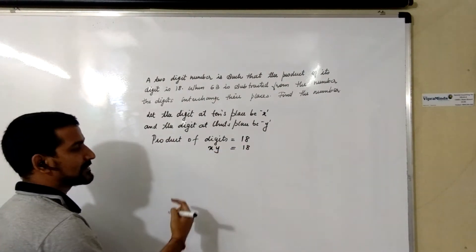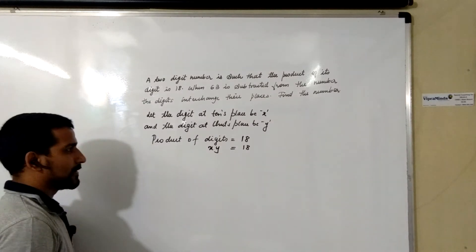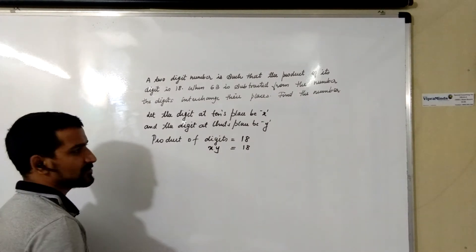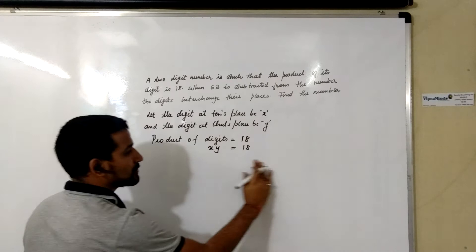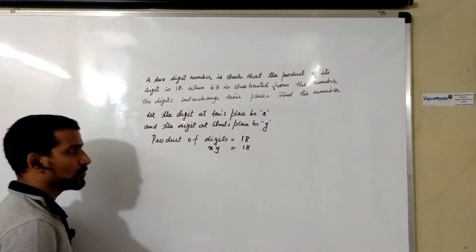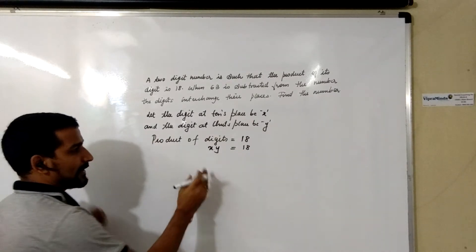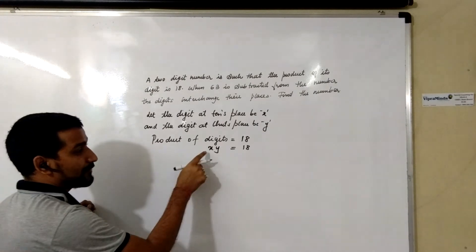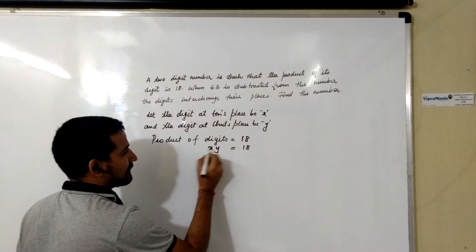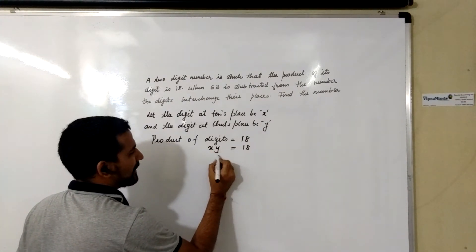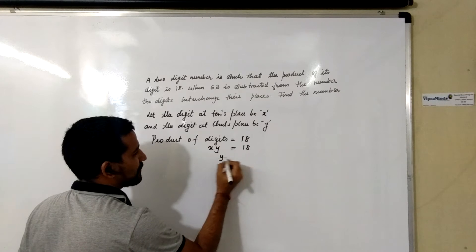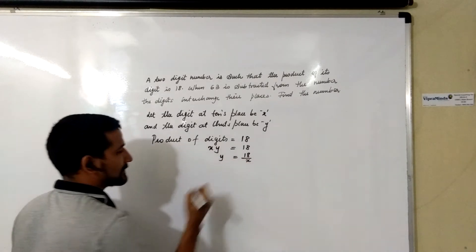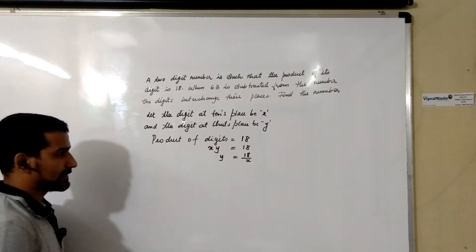The product of its digits, that is X × Y, equals 18. We will make one of the variables a subject because we want to solve using a quadratic equation in one variable. So we will make Y the subject. It will become Y = 18 / X.